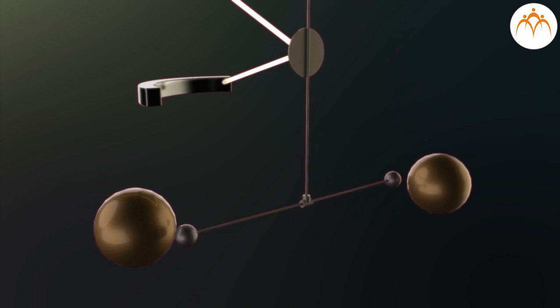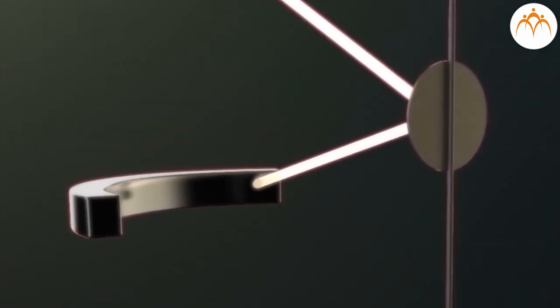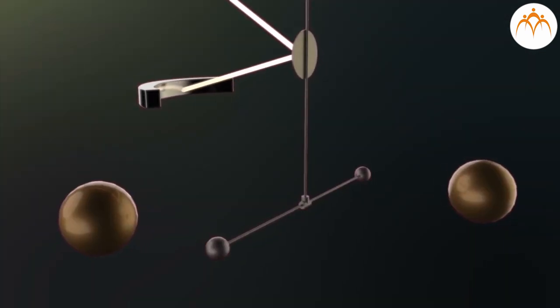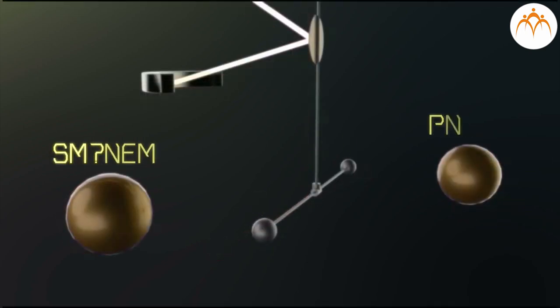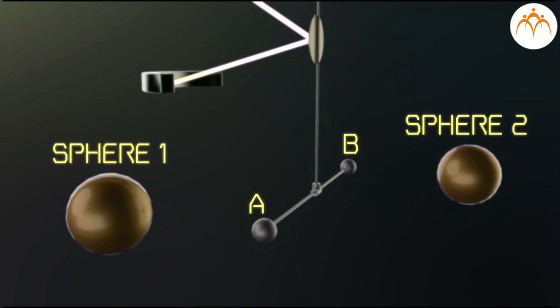The arms stopped rotating when they reached an angle where the twisting force of the wire balanced the combined gravitational force of attraction between the large and small lead spheres. By measuring the angle of the rod and knowing the twisting force or torque of the wire for a given angle, the force between the pairs of masses could be determined.